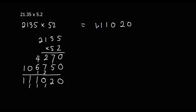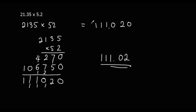So the answer to 2,135 times 52 is 111,020. But remember, I multiplied the question by 10 three times, so I need to divide the answer by 10 three times. So the answer to the decimal question is 111.02. Another way of looking at this: there were three numbers after the decimal point in the original question, so I need three numbers after the decimal point in the answer.